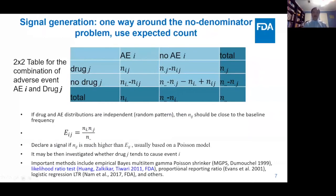One way to address this is based on a contingency table. If you make a table of AE and no AE on one side, and drug versus no drug on the other, and you assume independence between the AE and the drug, then by standard theory the expected value of the count Nij will be Eij — that's the row total times the column total divided by the grand total. This gives you the baseline. If you observe a count much higher than Eij, you might have a safety signal. This is the idea behind several methods, especially the likelihood ratio test developed by Huang, DuMouchel, and Tiwari at FDA, which is used widely for mining safety signals.